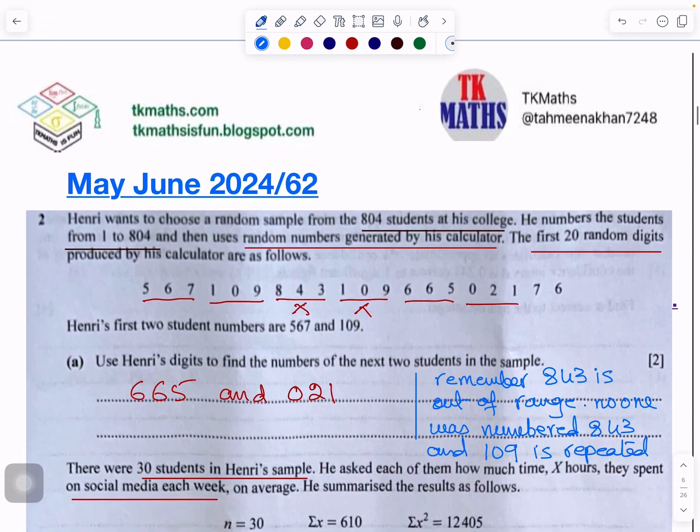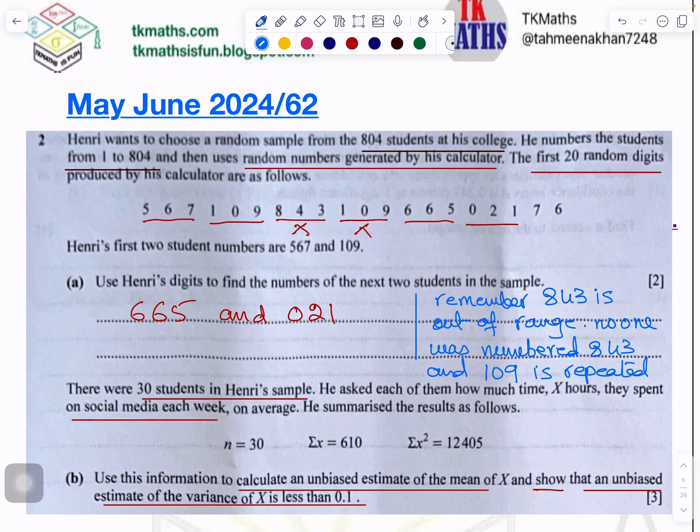Question number 2. This question has come, I think, after a long time, in which the random sample is generated through the digits by calculator or by any other means. These are the 20 randomly generated numbers in the sample. There were 804 students. Now, 804 is a three-digit number. When you are numbering students, the important thing here to remember is, whoever is number 1, actually, he will not be 1. He will be 001.